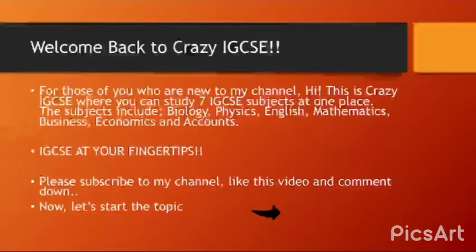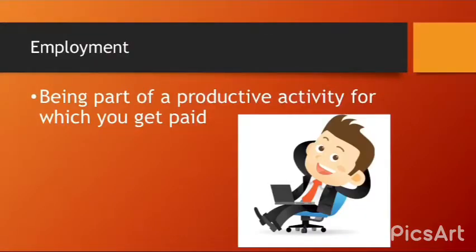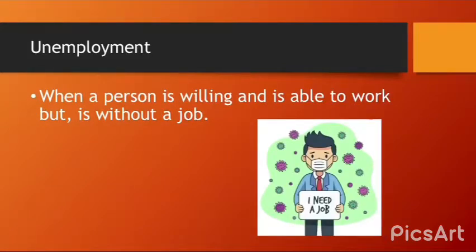Now let's start the topic. Employment is being part of a productive activity for which you are getting paid. The productive activity could include many types of jobs — for example, working in an office as a purchase manager or working in sales. Unemployment is when a person is willing and able to work but is without a job.